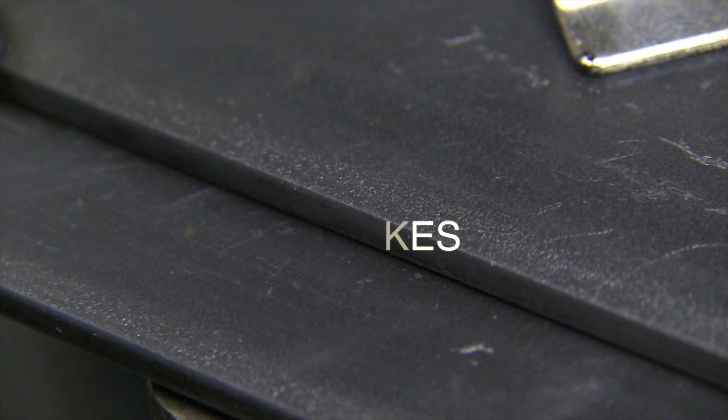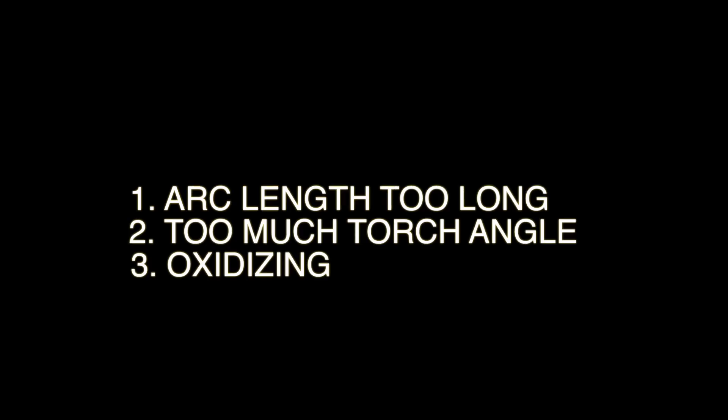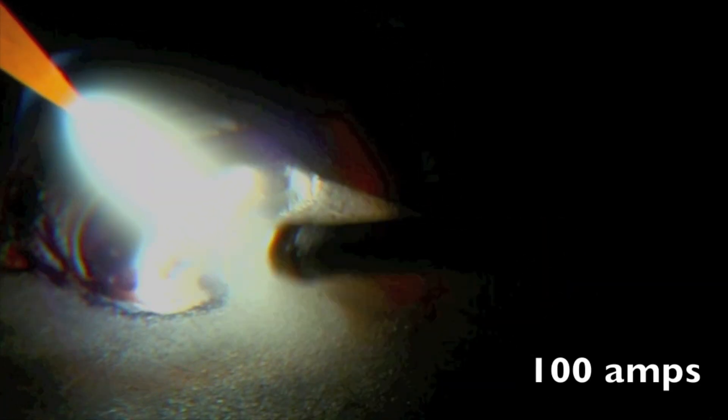The three biggest mistakes that I've seen people that are learning to TIG weld make are too much arc length, too much torch angle and oxidizing the hot tip of the filler. So you're pulling the filler out of the argon and it gets oxidized and then it introduces that oxide into the puddle and the puddle gets all funky.